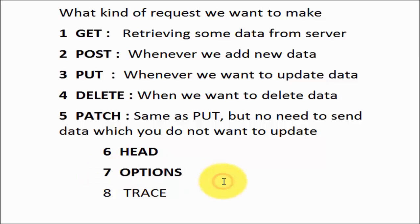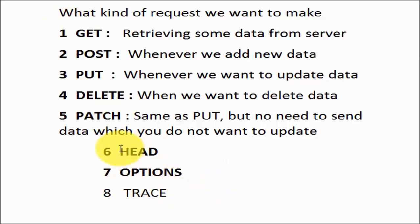Next is OPTIONS. Whenever we hit any API, how do we know what kind of methods that API supports — can we use GET, POST, PUT, DELETE? We use the OPTIONS method and in response we get all the methods which we can use while hitting that particular API.